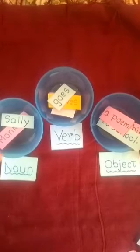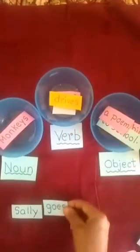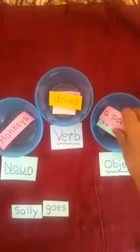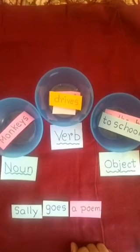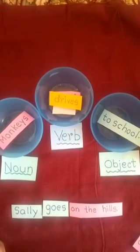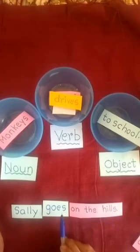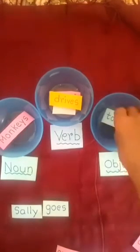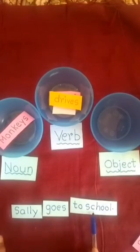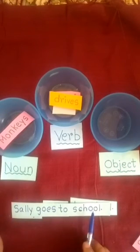The next noun is Sally. Sally is a noun. Verb: goes. Now let us see the object — a poem. Is it correct? No, it is not correct. Sally goes on the hills — yes, this is also correct, because goes relates with on the hills. Another object: Sally goes to school. This is correct. Sally goes to school. So the sentence is Sally goes to school.